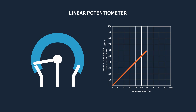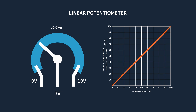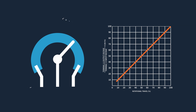Before jumping into the examples, I'll remind you about the difference between linear and logarithmic potentiometers. Linear pots are straightforward: if it's at the halfway position, the output is at the halfway point. For example, if your output varies from 0 to 10 volts as you rotate the shaft, then at 30% of the rotation you'll have 3 volts at the output, and at 65% of the rotation you'll have about 6.5 volts.